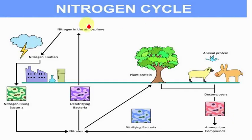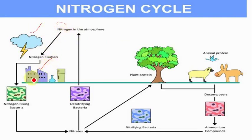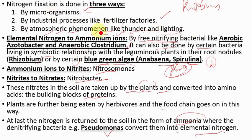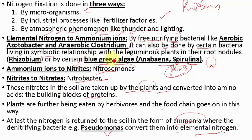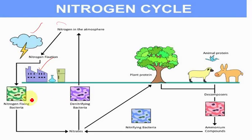Here you can see the diagram. Nitrogen is in the atmosphere and needs to be fixed. It can be fixed by natural processes like thunder and lightning, by industry like fertilizer factories, or by bacteria that can be free-living — such as aerobic Azotobacter and aerobic Clostridium — or bacteria living in symbiotic relationship with leguminous plants like Rhizobium, and by blue-green algae like Anabaena and Spirulina. In this way nitrogen is fixed.